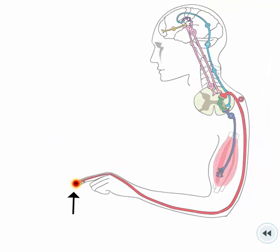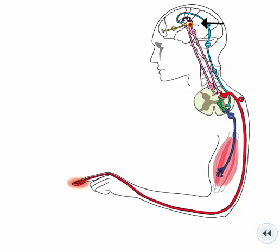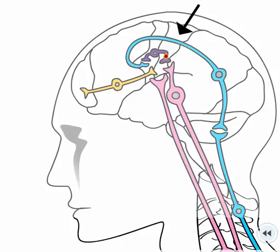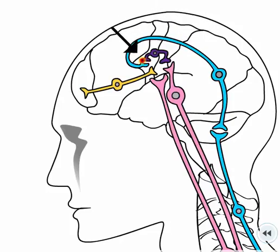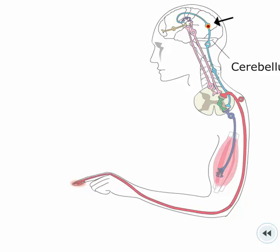In addition to the reflex arc, you might experience pain with a stimulus. When impulses from sensory neurons travel through the spinal cord to the sensory cortex area of the cerebrum, it results in conscious sensation of touch or pain. Once you feel pain, signals are sent to the motor area of the cortex. The motor cortex sends impulses to the cerebellum, where motor activity is coordinated.